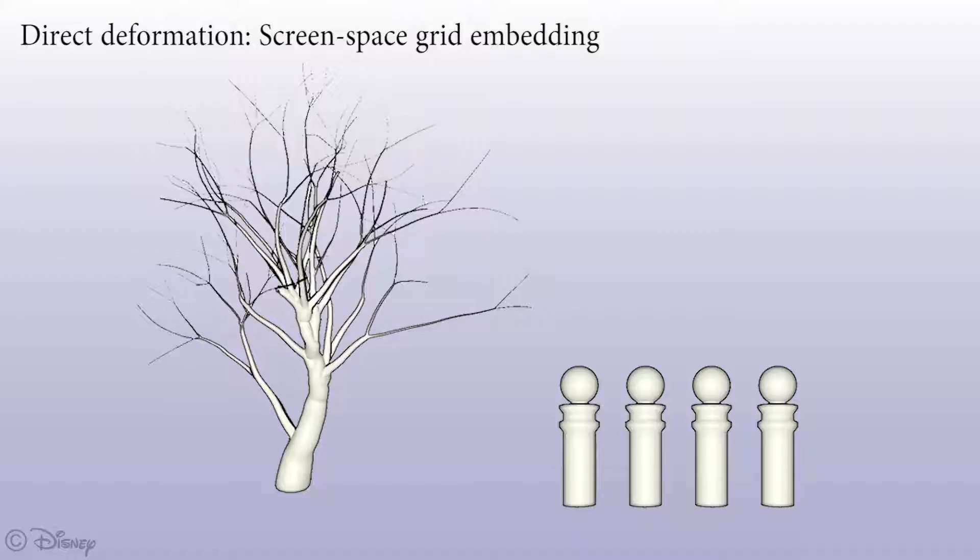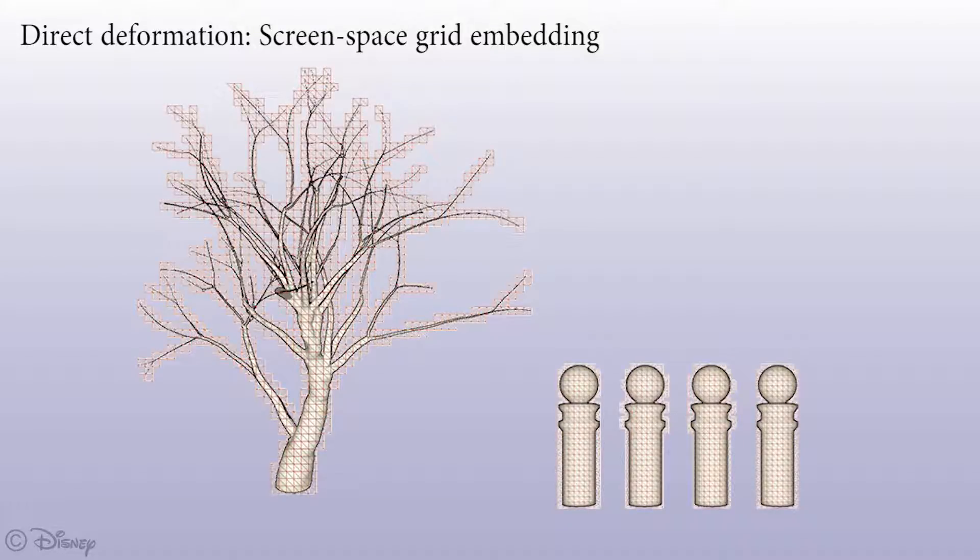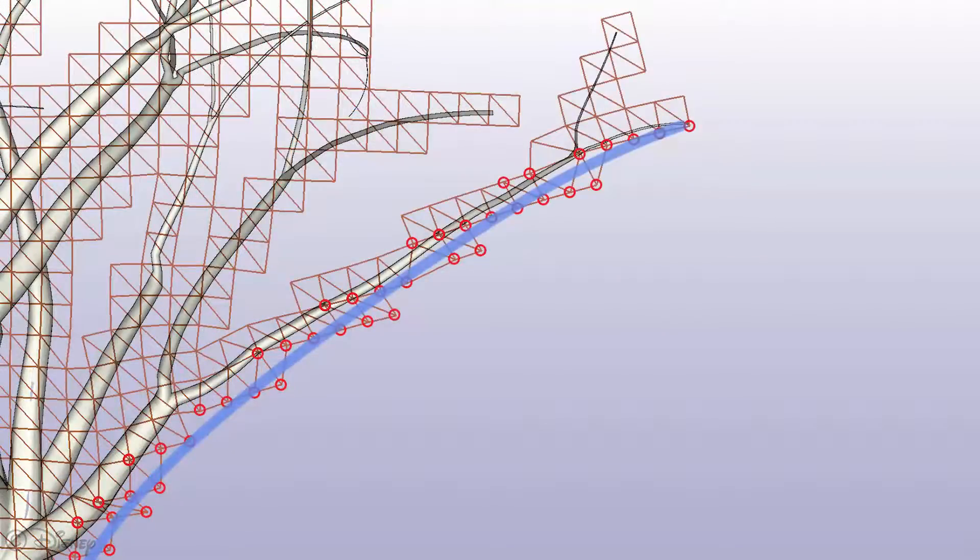We compute a coarse 2D embedding of the objects that reflects their individual parts. This allows for example deforming the branch of a tree without distorting the space around it as is often the case with 2D image warping.